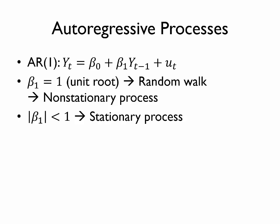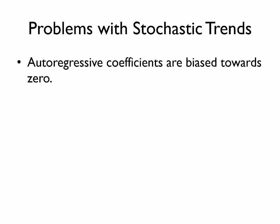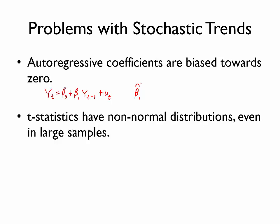So before we turn to those formal tests, let's first discuss some problems that we encounter when our time series variables have stochastic trends. So first, autoregressive coefficients are biased towards zero. If we have some time series variable and we would like to model that variable using an autoregressive process where the realization of y at time t depends on the realization of y at a previous time period and we were to use OLS to estimate beta 1 hat, we should find that that beta 1 hat is generally going to be too small in magnitude. A second problem is that t-statistics have non-normal distributions even in large samples. So why should we care about this? Well, anytime we do a hypothesis test, our critical values are based on the shape of the distribution. And so the fact that these t-statistics have non-normal distributions means that our hypothesis test conclusions could be incorrect.